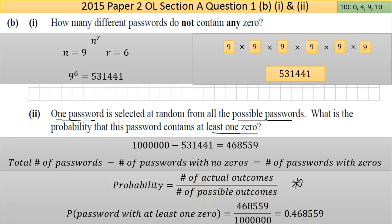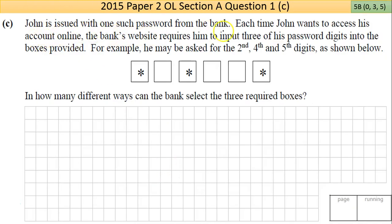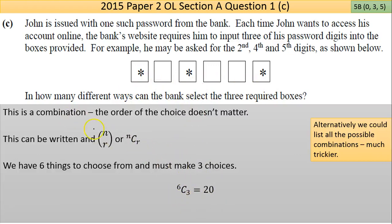Part c: John is issued with one such password from the bank. Each time John wants to access his account online, the bank's website requires him to input three of his password digits into the boxes provided. For example, he may be asked for the second, fourth, and fifth. In how many different ways can the bank select the three required boxes? Does the order matter here? It doesn't matter which ones they pick—they want to make three choices from six choices. So I think it's going to be 6C3.